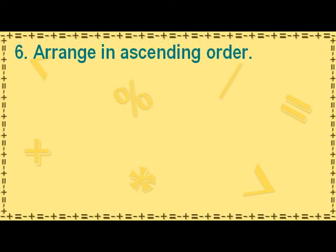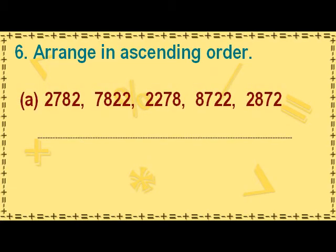Arrange in ascending order. Numbers are said to be in ascending order when they are arranged from the smallest to the largest number. First, we look for the smallest digit in the largest place value of the given numbers.